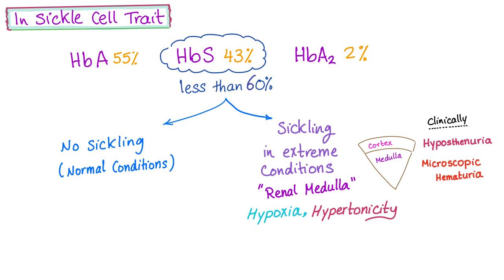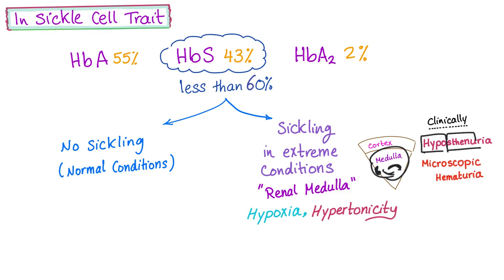That's why the only clinical symptoms you can have are microscopic hematuria — blood in the urine that the patient cannot see, only detectable under the microscope — and hypostenuria, which means less concentration, referring to the inability to concentrate urine because the renal medulla is suffering from cells sickling under these extreme conditions. Some sources also add cramping as a symptom in sickle cell trait.